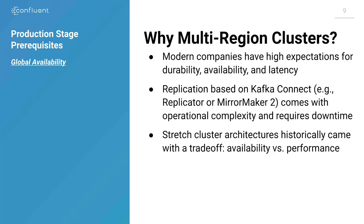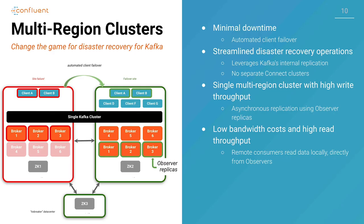Multi-region clusters. Increasingly, this is just a necessity. You can't run all in one availability zone or data center. The requirements for continuity of operations and availability are becoming too high for many enterprises. We've got existing solutions like Confluent Replicator that can take data in one cluster and move it to another, but multi-region clusters take that up a notch. The key here is a new kind of replica called an observer — a replica that's collecting messages from the leader but is explicitly asynchronous.